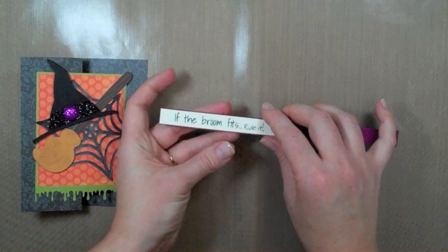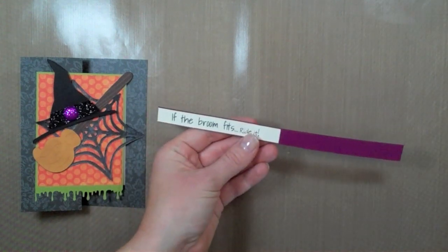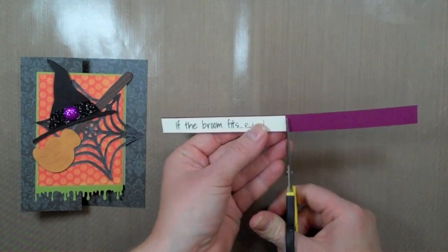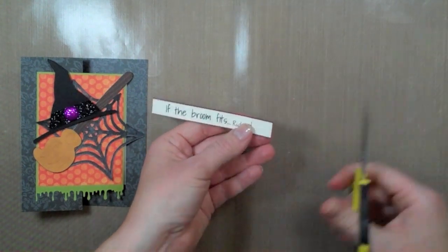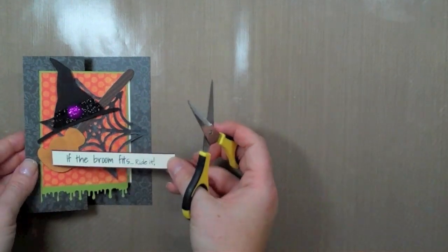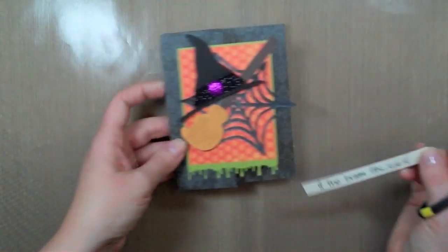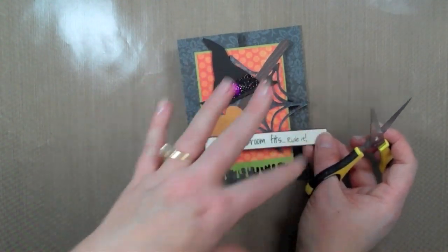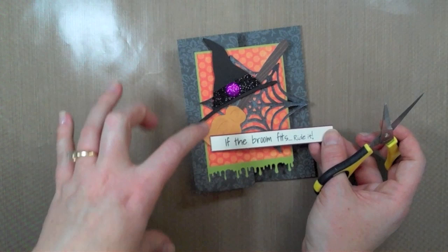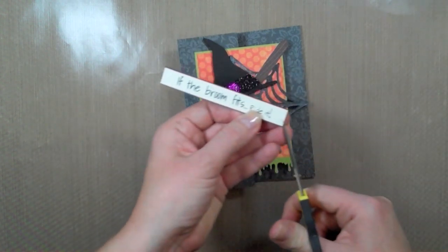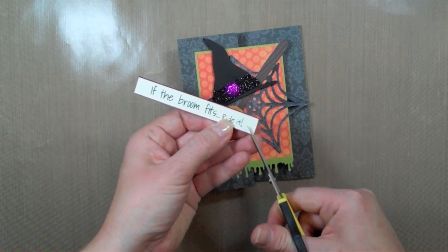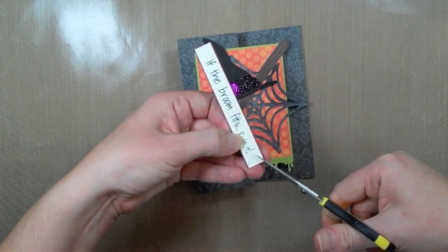Ok so I have taken my sentiment and I have added it just to this piece of rich razzleberry cardstock. I am bringing the purple in in a few different places and it's just an accent color but if I carry it around the card more then it looks more purposeful than if I just have it right there. So I am going to do that and I am going to cut just a slight bit off of this and then make my banner ends here.